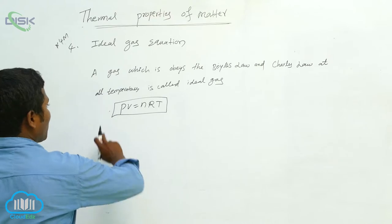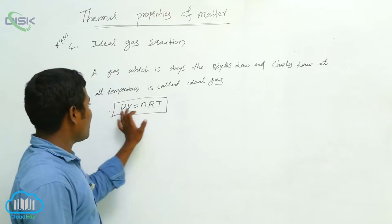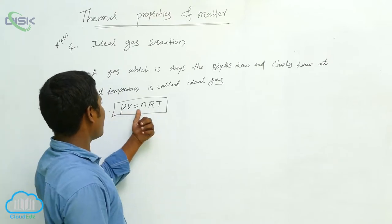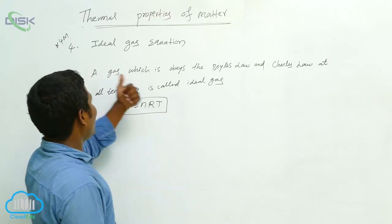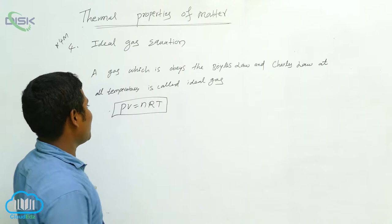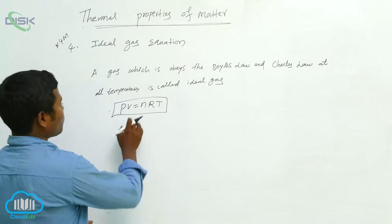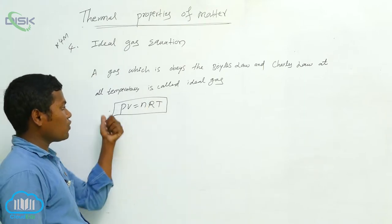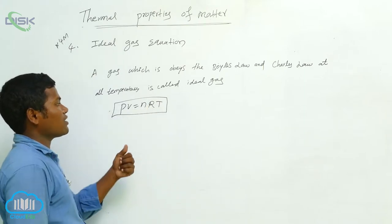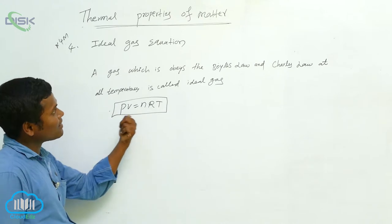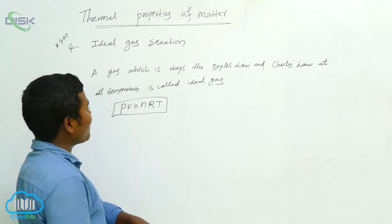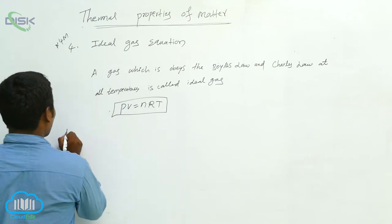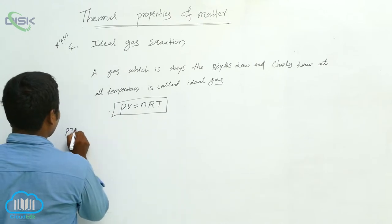What is that formula? PV is equal to nRT. Then we can say this is the ideal gas equation. This is the ideal gas equation.